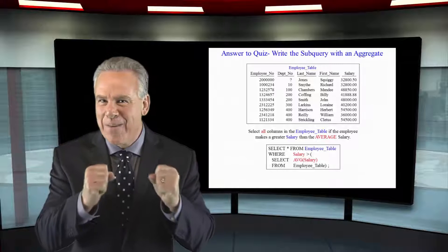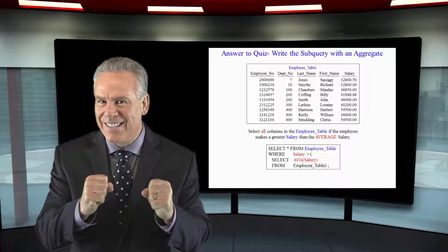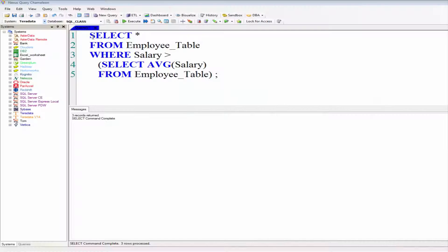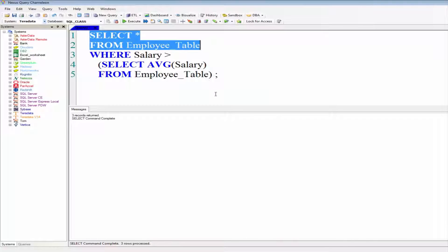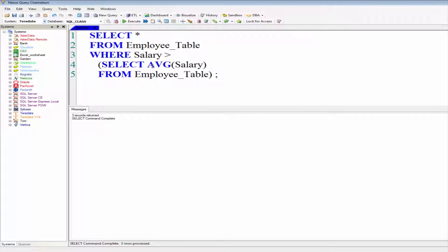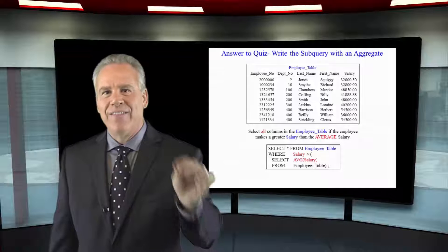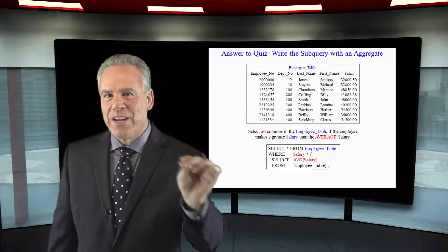I want you to select everything from the employee table where salary is greater than the average salary. Again, select the average salary from employee table, close paren. That's how it's done. Great job.